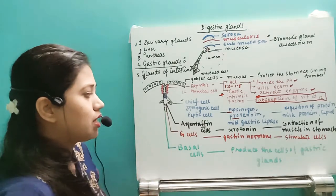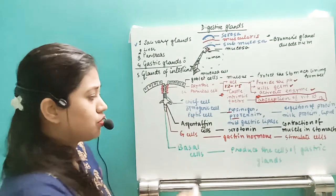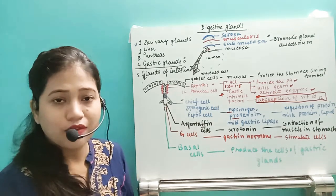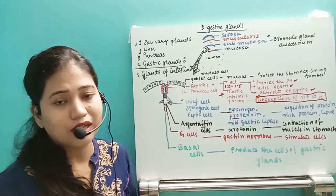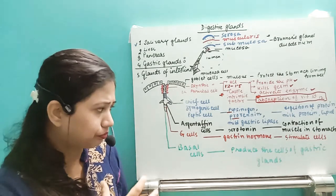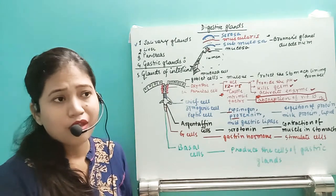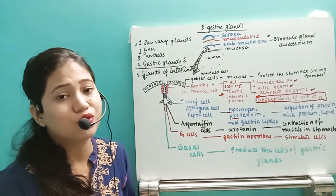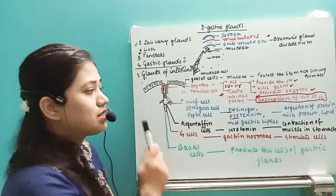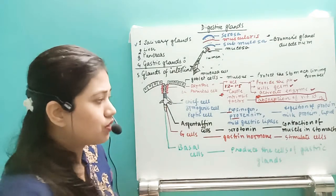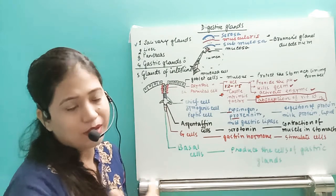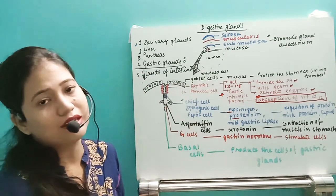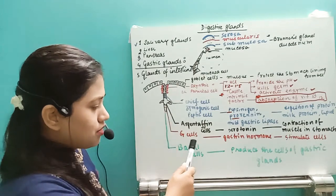Towards the bottom is the argentaffin cell, which releases serotonin. Serotonin is a vasoconstrictor — as discussed in the connective tissue chapter alongside heparin and histamine from basophils. In the stomach, serotonin helps in the contraction of smooth muscle present in the stomach lining.